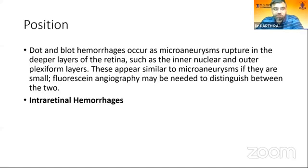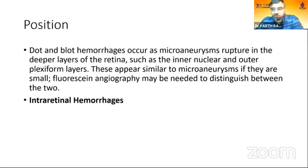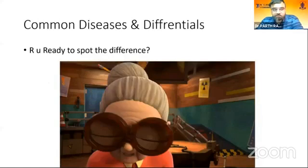Regarding position, dot and blot hemorrhages occur when microaneurysms rupture in the deeper layers of the retina, such as the inner nuclear layer and outer plexiform layers. They appear similar to microaneurysms if small, and fluorescein angiography may be needed to distinguish between the two. They are also called intraretinal hemorrhages because they are in deeper layers.